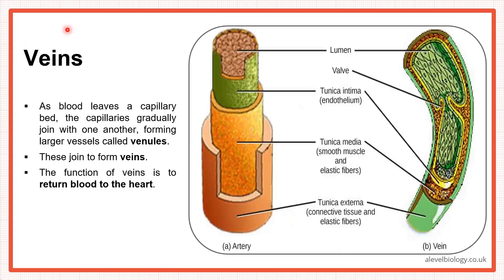Both arteries and veins have the same three layers: tunica externa, tunica media, and tunica interna. As blood leaves the capillary bed, capillaries gradually join to form venules, and venules join to form veins. Veins carry deoxygenated blood back to the heart. The lumen of veins is wider compared to arteries. Veins also contain one-way valves, which are not found in arteries — these help push blood against gravity back to the heart. The tunica media is thicker in arteries and thinner in veins.